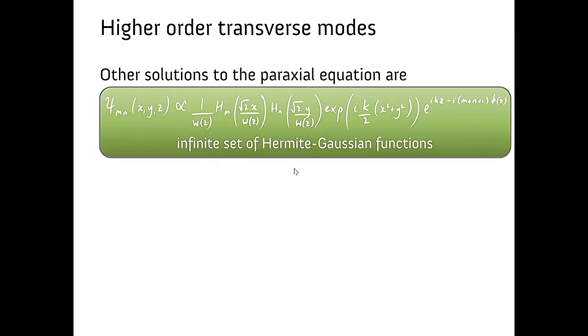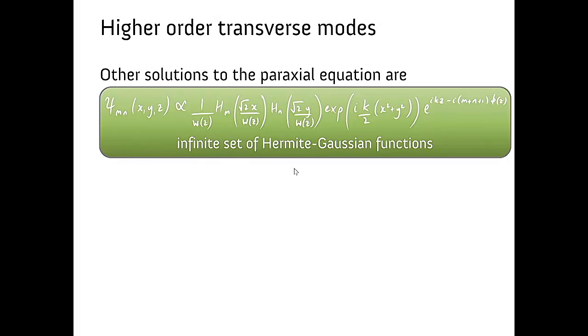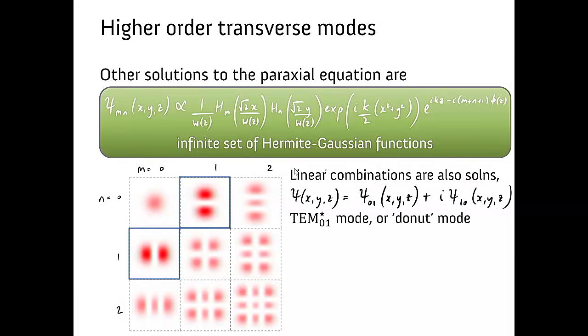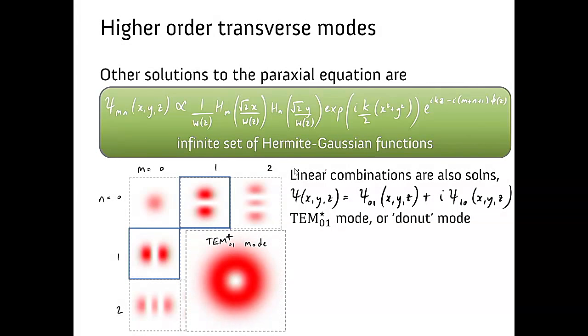This isn't the only solution to the paraxial equation. There are heaps. In general, there's an infinite set of Hermite-Gaussian functions. They look like this. You can also take linear combinations of them. So if I took a linear combination of these two, which is a anti-node, two anti-nodes, one here and one here, and added it to one here and one here, that happens entirely coherently and I end up getting this TEM01 donut mode. It's called a donut mode for obvious reasons. It turns out to be really useful for trapping atoms inside of. So we can use light to trap atoms. And here's a Bose-Einstein condensate in the shape of a donut.